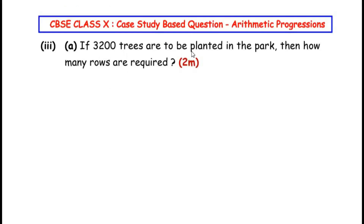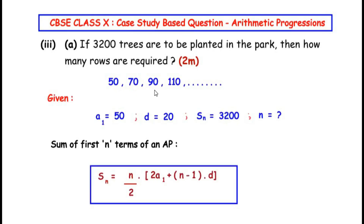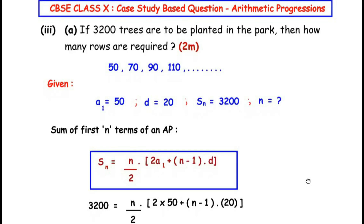The third sub-question: if 3200 trees are to be planted in the park, how many rows are required? Here we know the total number of trees S_n = 3200 and need to find n. We use the sum of first n terms formula: S_n = (n/2) × [2a1 + (n − 1) × d].